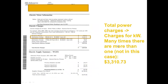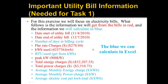Now, power charges. Power charges are for kilowatts. Sometimes there are many charges for kilowatts, but in this case there's only one charge, which is up here. Each kilowatt is about $3. This is what you're billed for, but not what you actually used. We update our table with the $3,310.